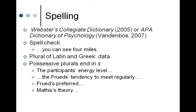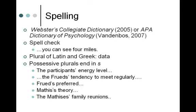If you have more than one person named Mathis — the Mathises — you add ES to make it plural, and then just put an apostrophe after that S for possessive: 'The Mathises' family reunions.' So just keep an eye out on those things.